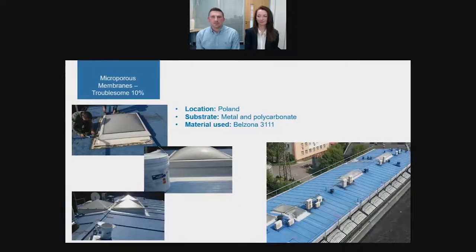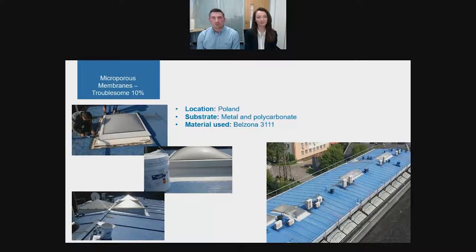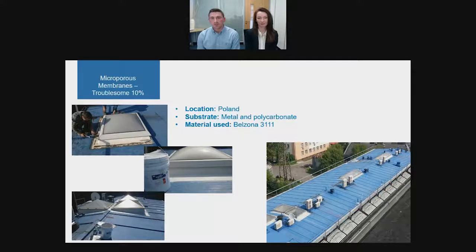Looking at this case study from Poland — remembering the troublesome 10 percent areas we mentioned earlier, this is exactly the case here. Only the skylights required repairing, not the whole roof. They were suffering from deteriorated sealant and every time it rained it leaked into the offices below. The solution was to apply a two-coat membrane incorporating a reinforcement sheet to the joints between the skylights and roof. The next time it rained, the customer found no leaks and was happy with the application.